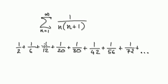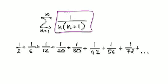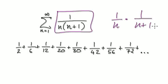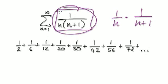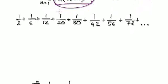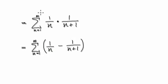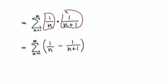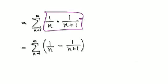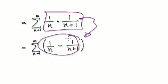Well, to do this, rewrite this as one fraction multiplying another fraction. So rewrite this as this — one fraction multiplying another fraction. The clever part is to rewrite this in this form.